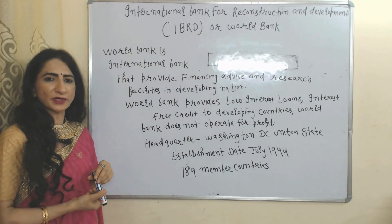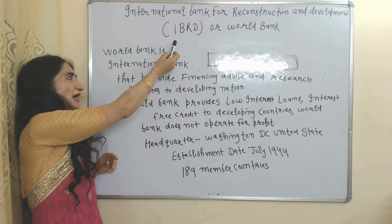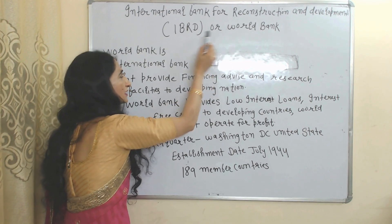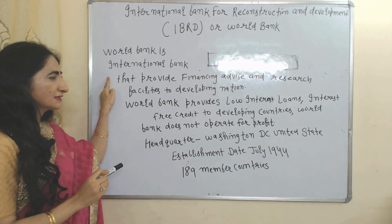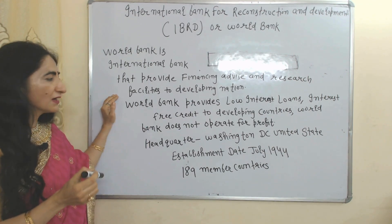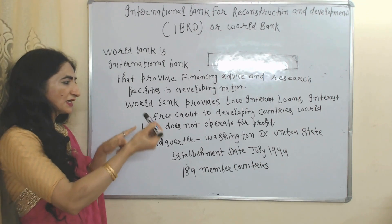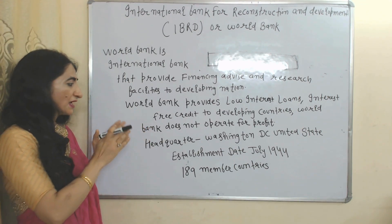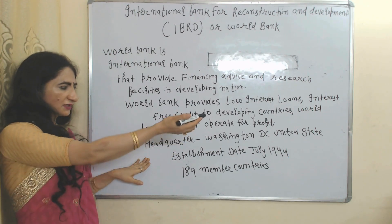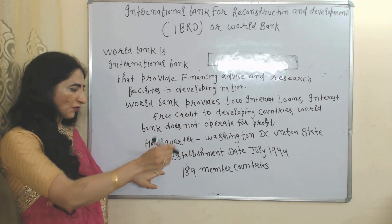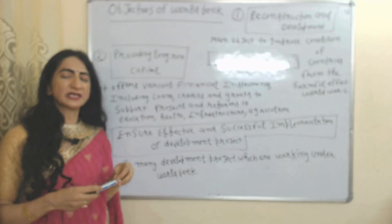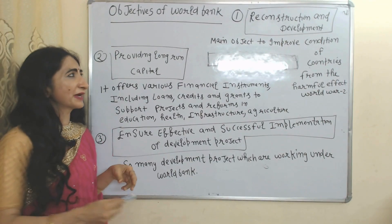Now we talk about the International Bank for Reconstruction and Development, or IBRD — also called the World Bank. IBRD and World Bank are the same; IBRD is the official name. World Bank is an international bank that provides financial advice and research facilities to developing countries. It provides low-interest loans and interest-free credit to developing countries and does not operate for profit. Headquarter is in Washington, USA. Established in July 1944, it currently has 189 member countries.